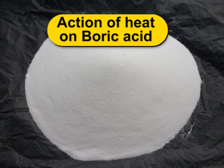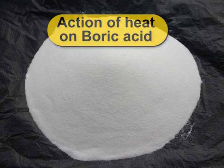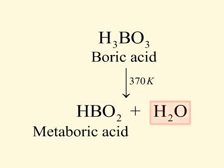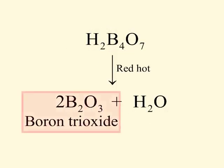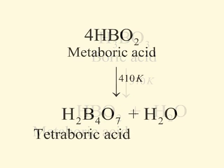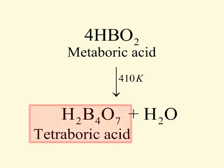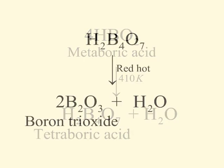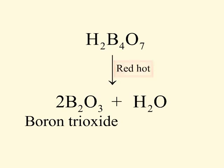We will now learn about action of heat on boric acid. When heated, boric acid loses water molecules in three stages and finally changes to boron trioxide. Boric acid when heated at 370 K forms metaboric acid and water. Metaboric acid when heated at 410 K forms tetraboric acid and water. Tetraboric acid when heated to red hot forms boron trioxide and water.